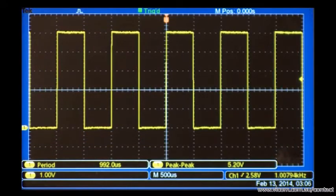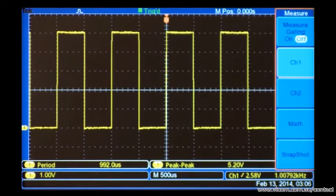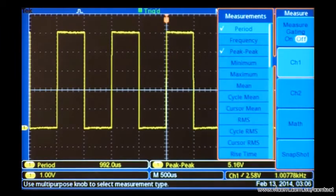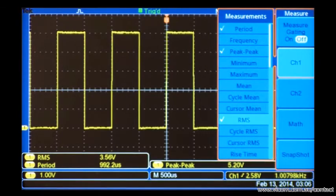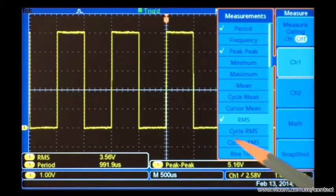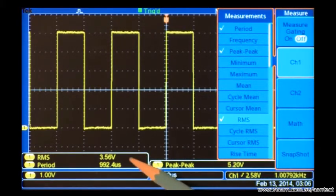So far, we've taken automatic measurements we could have taken manually. But some measurements are just not that easy to take manually. Let's add root-mean square voltage. This measurement gives us the RMS voltage for the first cycle on the display. Let's add a few more.